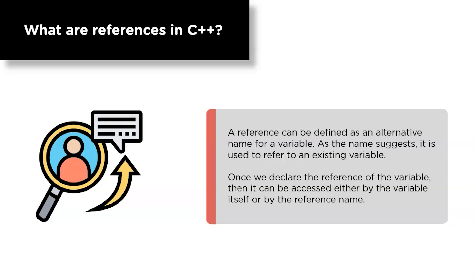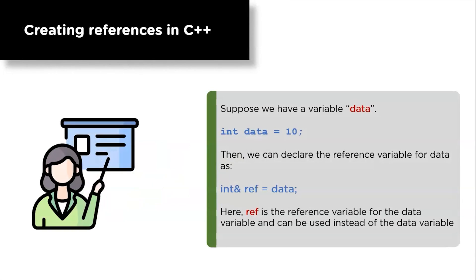Now let's learn how to create a reference in C++. Suppose we have a variable named 'data'. First comes its data type, then the variable name, then we assign the value. Here 'int' is the data type, 'data' is the variable name, and 10 is the value. To declare a reference variable for 'data', the syntax is: data type with ampersand sign, then the name of the reference variable, equals to the variable name. For example, 'int& ref = data' — so 'ref' is the reference variable for 'data' and can be used instead of the variable name.